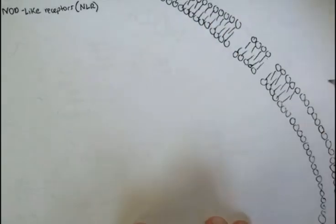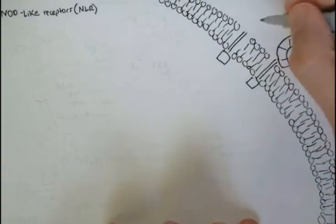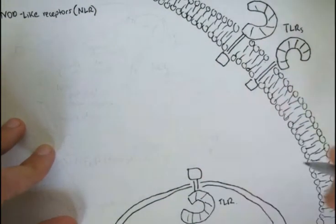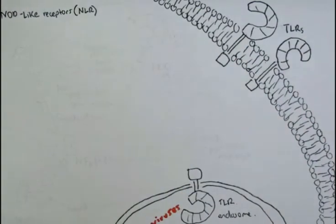The intracellular pathogen recognition receptors are mostly known as NOD-like receptors, or NLRs. I suggest watching the video on toll-like receptors to get a better understanding of how these receptors work.